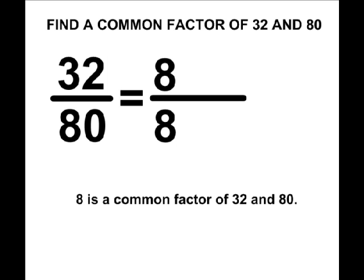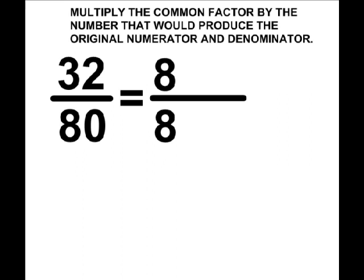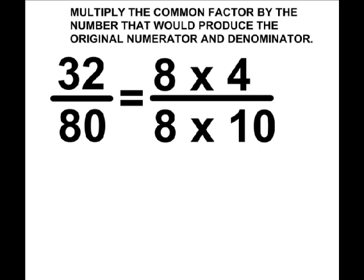So what we are going to do is write the common factor of 8 on the top and the bottom of a new fraction bar, and then we are going to multiply each of the 8s by the number that would produce the numerator and the denominator of the given fraction. 8 times 4 is 32, and 8 times 10 is 80.